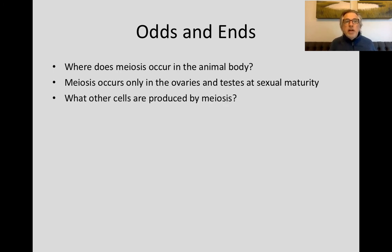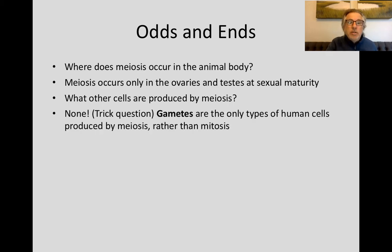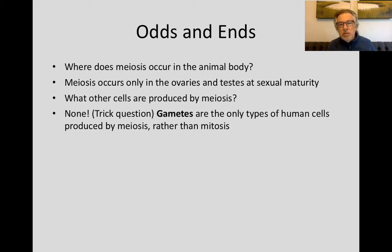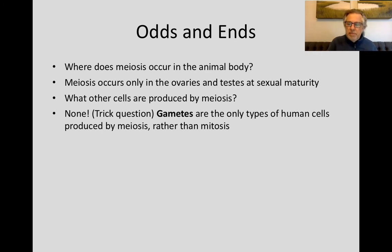What other cells are produced by meiosis, you might ask? Well, that's a trick question. None. Gametes are the only types of human cells produced by meiosis rather than mitosis. Many students wonder what happens to cells that are produced by meiosis — they all either mature into gametes or they die.